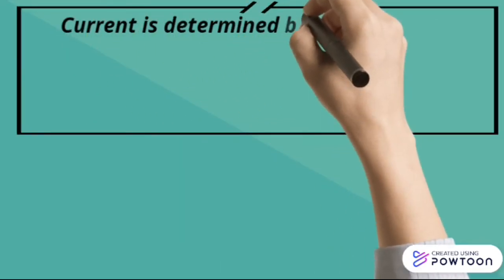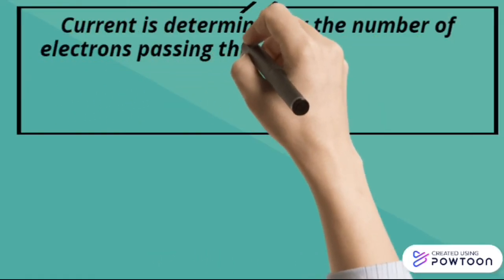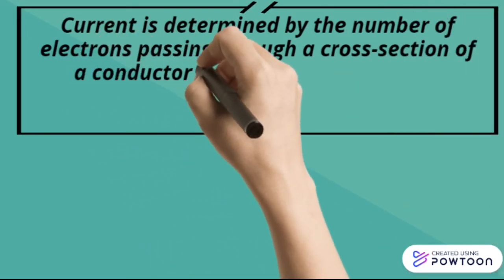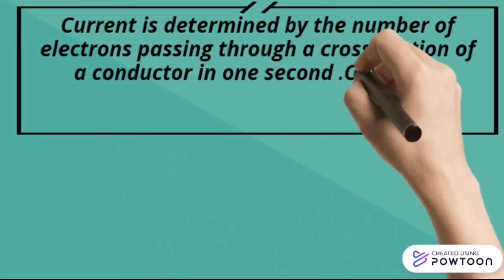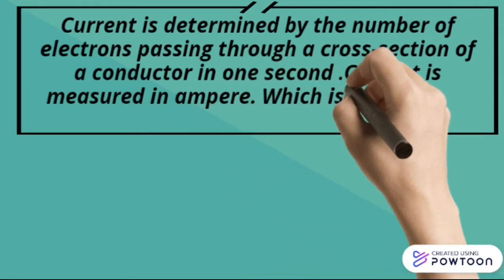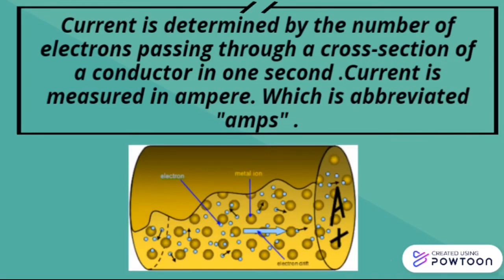Current is determined by the number of electrons passing through a cross-section of a conductor in one second. Current is also measured in amperes, abbreviated amps. This image shows the amount of electrons passing through the width of the wire in one second.